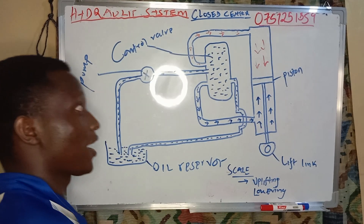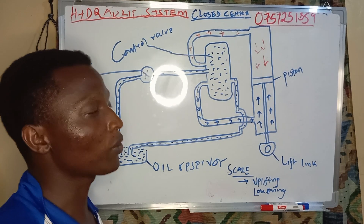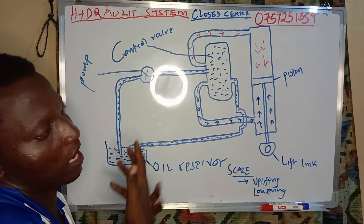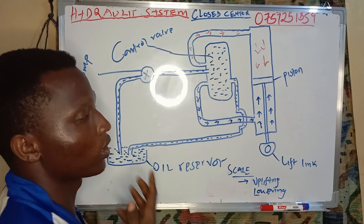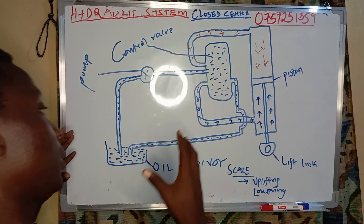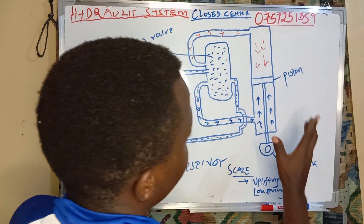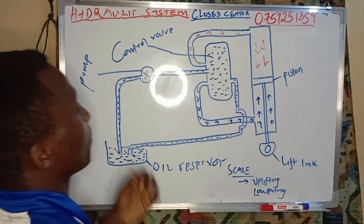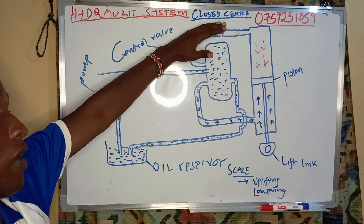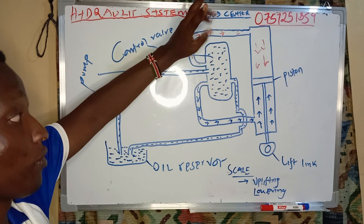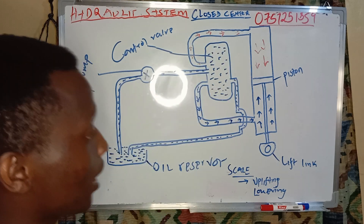Hello my people. I have a closed-center hydraulic system of a tractor. Now, how does a hydraulic system of a tractor work in lifting, lowering, and neutral? Today I have come with a good structure. This is one out of the two types — we have open and we have closed. This is the closed one.